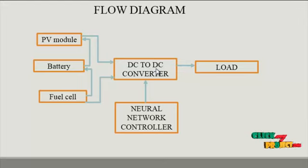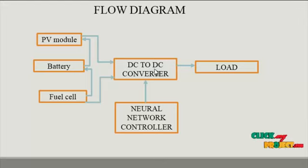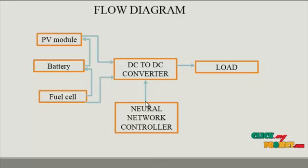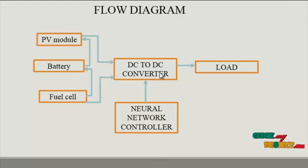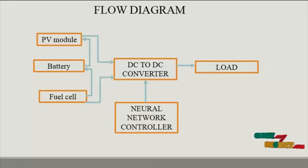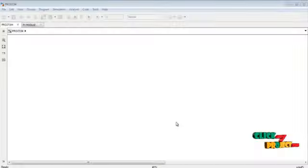The boost converter uses IGBT switches. The IGBT switch control signal is generated by the neural network controller. The neural network controller is an emerging controller that provides control signals to the IGBT switches, reducing harmonics, switching losses, and switching stress. Overall efficiency is increased through the use of the neural network controller.